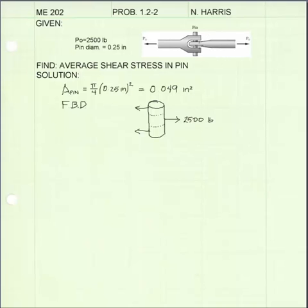The load in the member on the right is 2500 pounds. It is acting at the center of the pin. The pin then distributes that load over two arms of the clevis. Each of those arms must therefore have a force equal to half of 2500 pounds for the pin to be in static equilibrium.